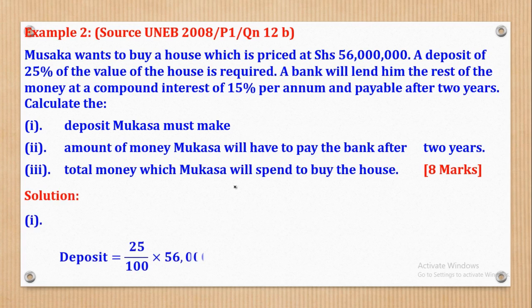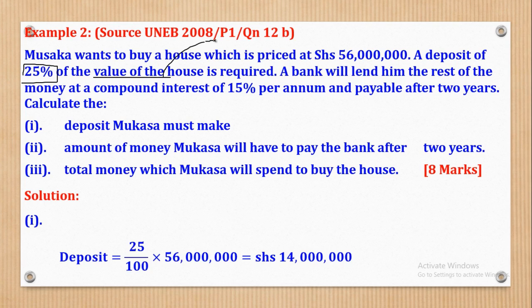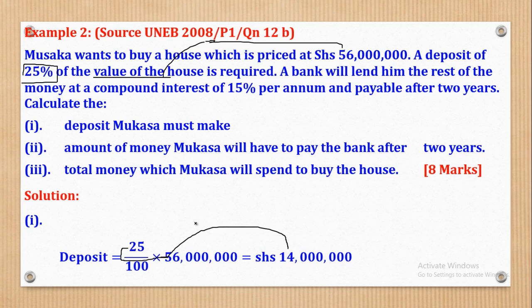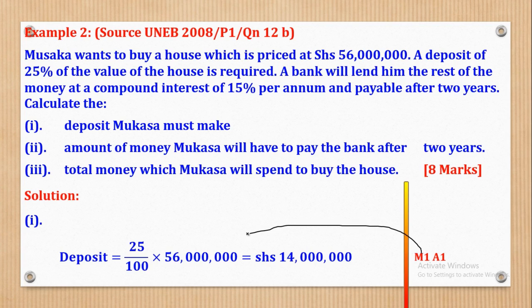We start with Roman numeral 1: the deposit. They said he has to pay a deposit of 25% of the value of the house, and the value was 56,000,000. So it will be 25% of 56,000,000, which is 25 over 100 multiplied by 56,000,000, giving shillings 14,000,000. That was the deposit Mkasa had to pay. For marking: M1 for substitution and A1 for the output.